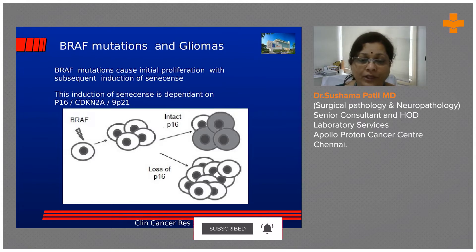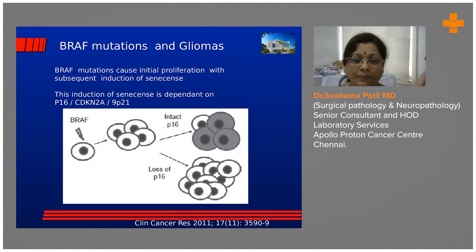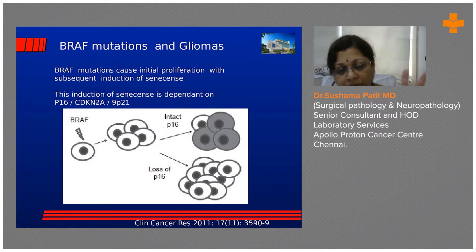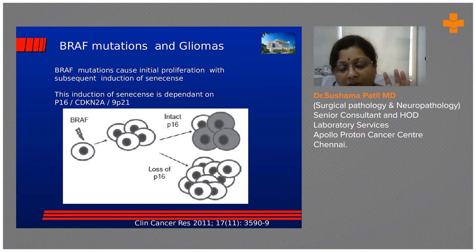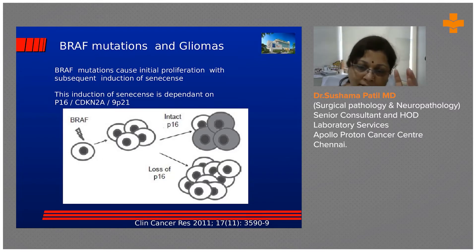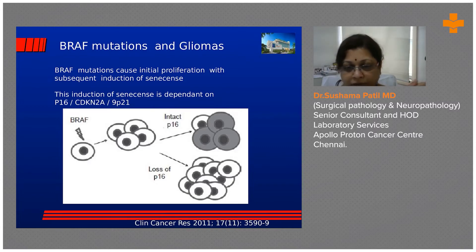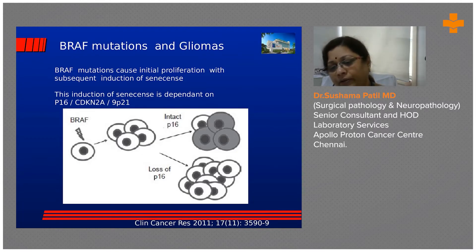Looking at the cartoon depiction: when a cell is hit by a BRAF mutation or gene abnormality, it starts proliferating. BRAF is very peculiar — during the initial phase of proliferation, if the p16 gene (cyclin-dependent kinase inhibitor 2A, mapping to 9p21), a tumor suppressor gene, remains intact, tumor-induced senescence gets activated and the tumor stops proliferating. However, if p16 abnormalities develop during the initial proliferation phase, the story changes entirely. The pilocytic becomes aggressive, starts recurring, and can even become a high-grade glioma.